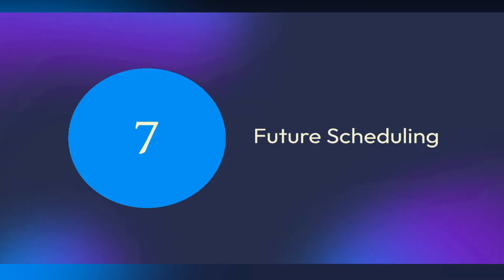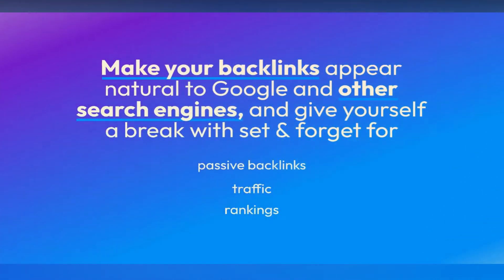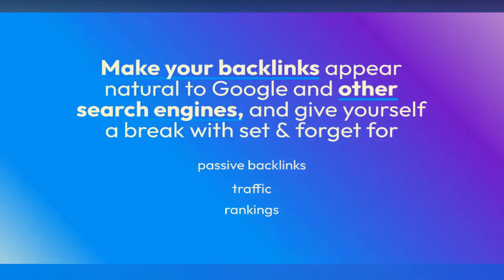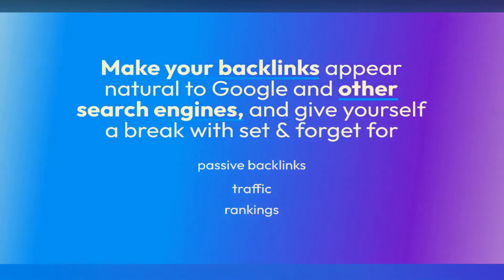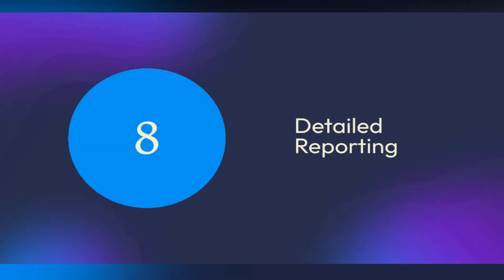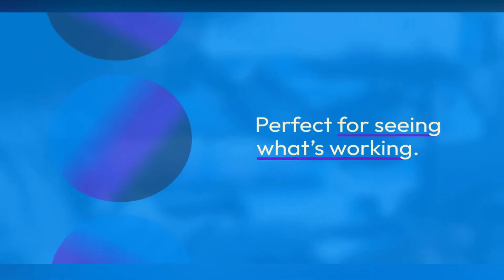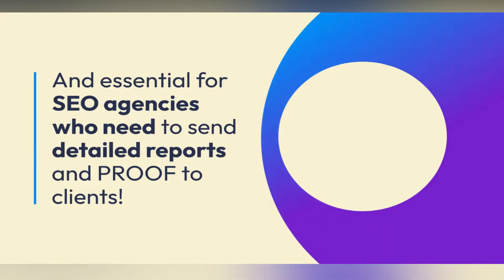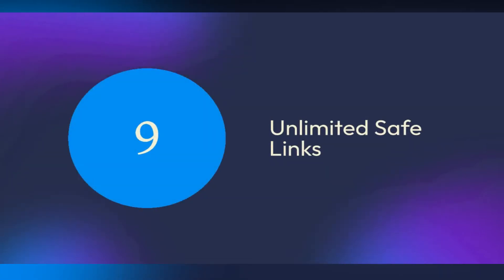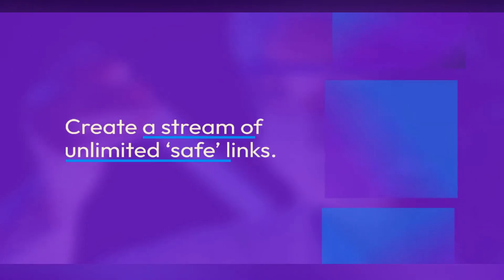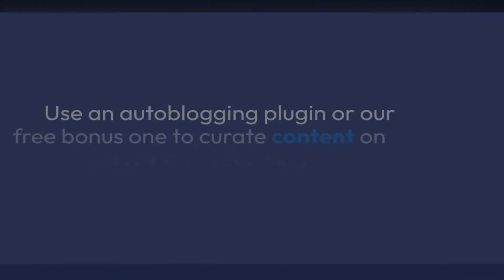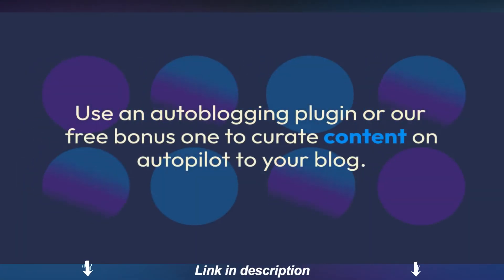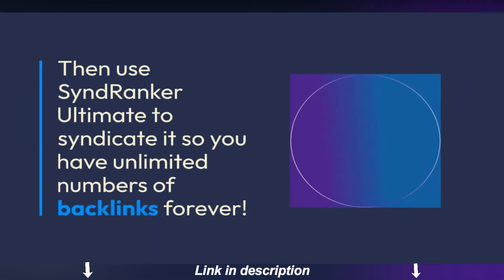Feature 7: Future Scheduling. Make your backlinks appear natural to Google and other search engines, and give yourself a break with set-and-forget for passive backlinks, traffic, and rankings. Feature 8: Detailed Reporting — perfect for seeing what's working and essential for SEO agencies who need to send detailed reports and proof to clients. Feature 9: Unlimited Safe Links. Create a stream of unlimited safe links. Use an autoblogging plugin to curate content on autopilot to your blog, then use SyndRanker Ultimate to syndicate it so you have unlimited backlinks forever.